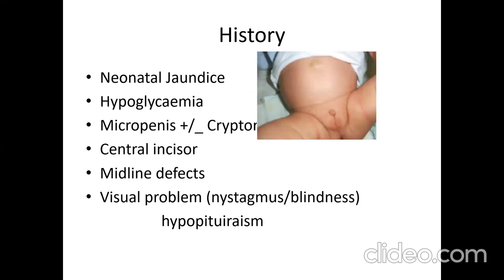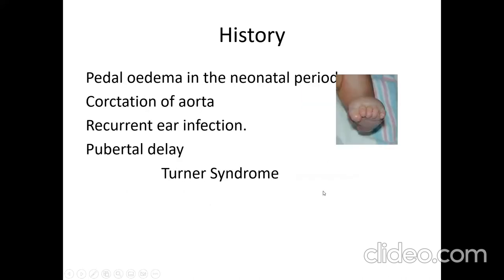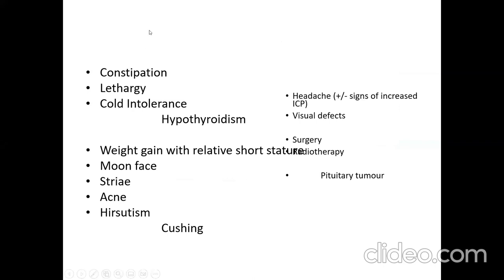When suspecting hypopituitarism, look for a history of neonatal jaundice, hypoglycemia, micropenis or midline defects, vision problems, blindness, or nystagmus together with short stature. A single central incisor is a sign of hypopituitarism. For girls with short stature, ask about neonatal pedal edema, recurrent ear infections, and pubertal delay — these are signs of Turner syndrome. Constipation, lethargy, and cold intolerance suggest hypothyroidism. Headache and visual defects may indicate a pituitary tumor.